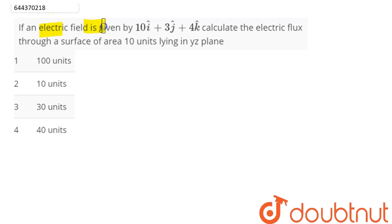Question is: if an electric field is given by 10i plus 3j plus 4k, calculate the electric flux through a surface of area 10 units lying in the yz plane.